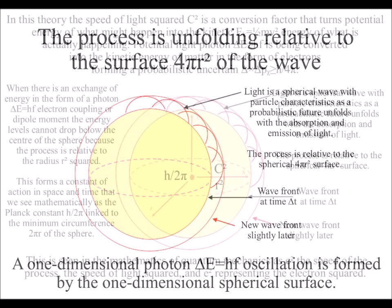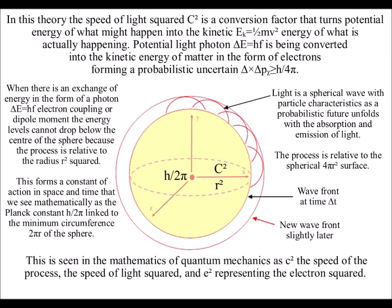Because the process is unfolding relative to the spherical surface of the wavefront, we have to square the radius, R squared. This is seen in the mathematics of quantum mechanics as C squared, the speed of the process, the speed of light squared, and E squared, representing the electron squared.